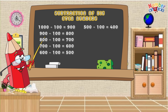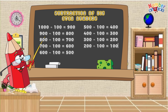400 minus 100 is equal to 300! 300 minus 100 is equal to 200! 200 minus 100 is equal to 100! 100 minus 100 is equal to 0!